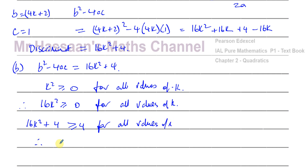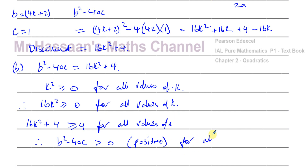Therefore, b squared minus 4ac is greater than 0 — it's definitely going to be positive for all values of k. That completes the proof for part b.